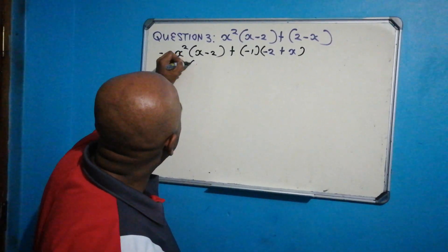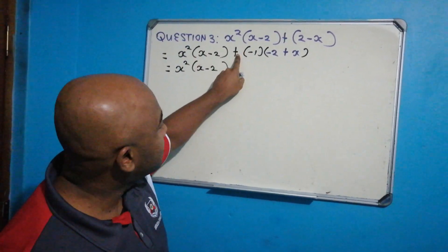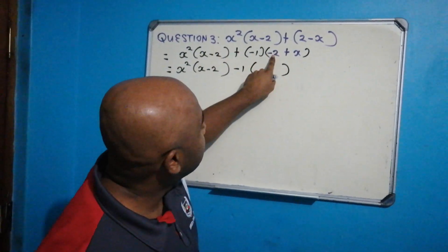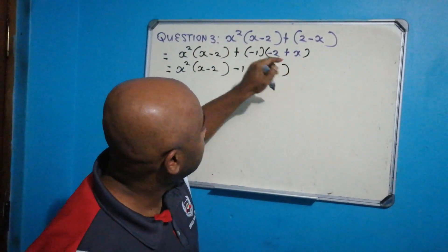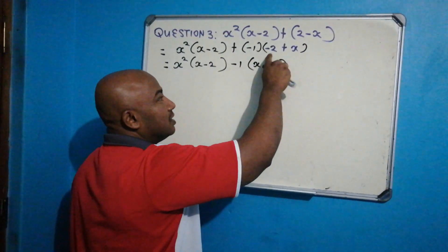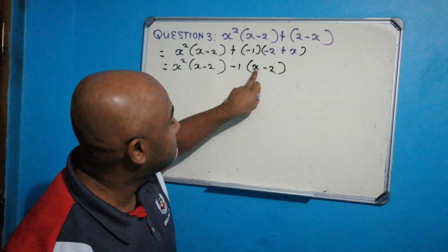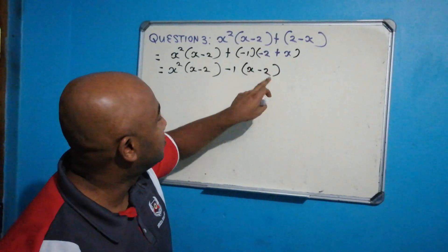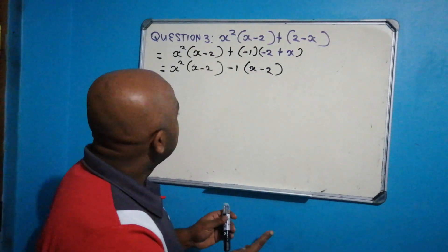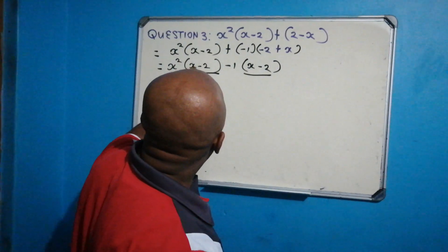Now I have x squared times x minus 2, and a positive times a negative gives negative 1. Then minus 2 plus x is the same as x minus 2 — I'm just rearranging the positions, not changing the signs: still positive x and negative 2. So what you notice now is that x minus 2 is common across both terms.